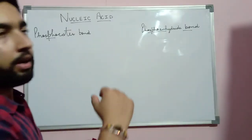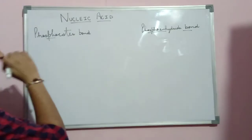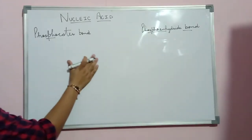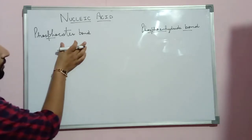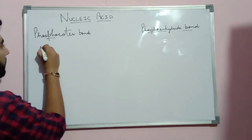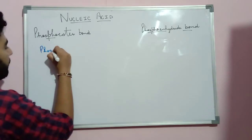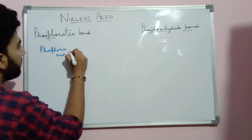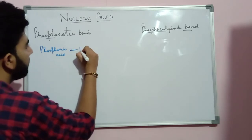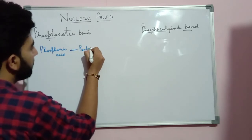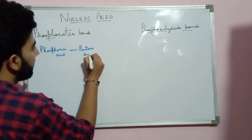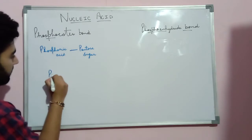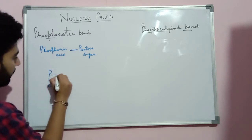We will discuss how the formation of these two bonds takes place. First, how does the phosphoester bond form? This phosphoester bond forms between the phosphoric acid and the pentose sugar in the case of DNA or RNA. So how does this bond form? This is the structure of phosphoric acid.